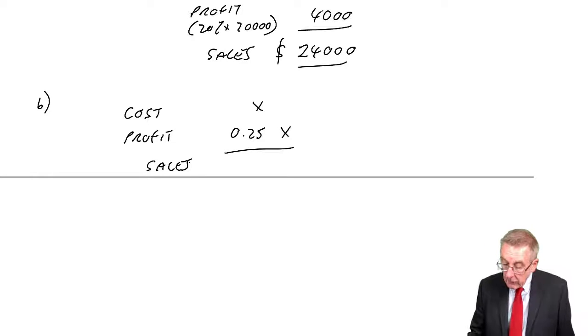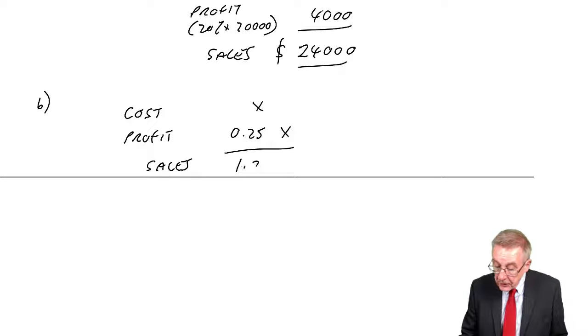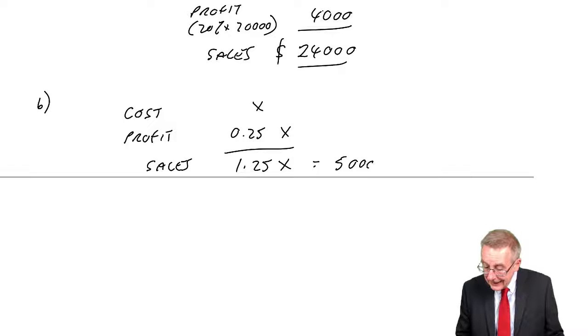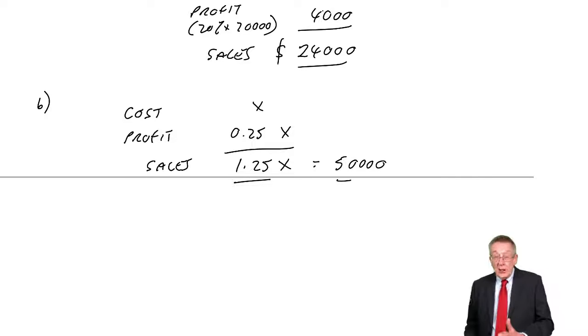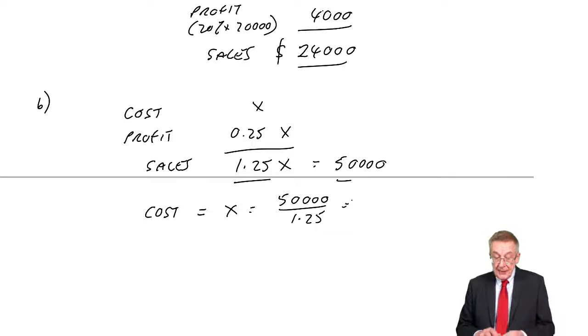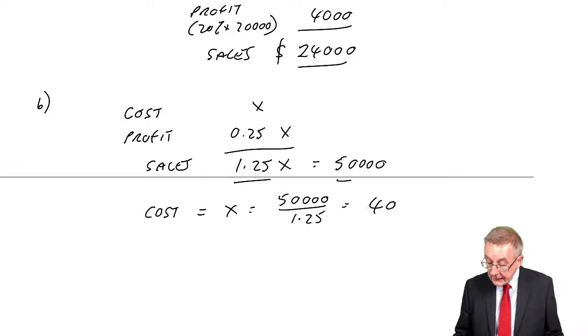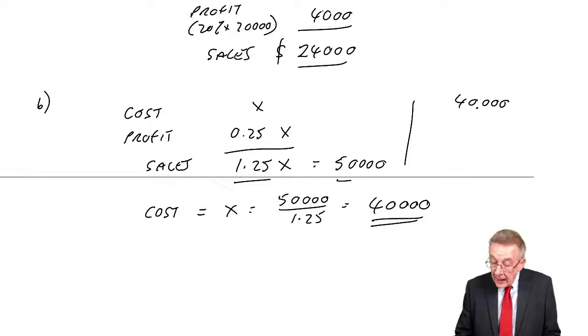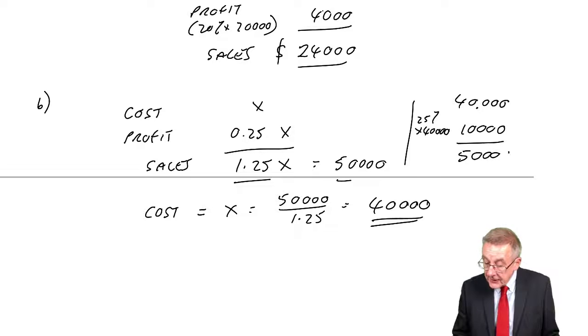It's a markup, 25% of cost. And therefore, the sales, 1X plus 0.25 of X is 1.25X. And we know what the sales are, 50,000. So the cost of goods sold, or X, divide both sides by 1.25. 50,000 divided by 1.25 is 40,000. Of course it checks, although don't waste time in the exam checking. But if the cost is 40,000, the markup, the profit, 25% of 40,000 is 10,000. It does indeed give us sales of 50.